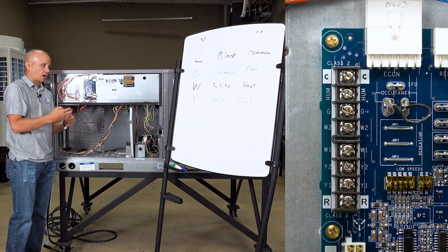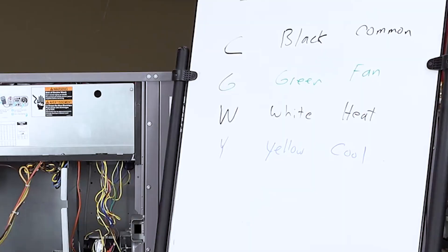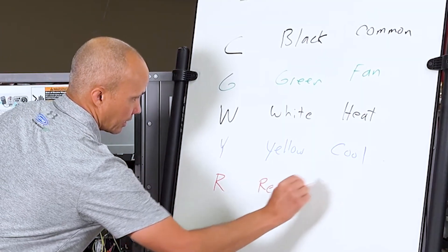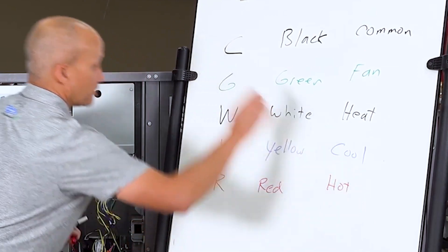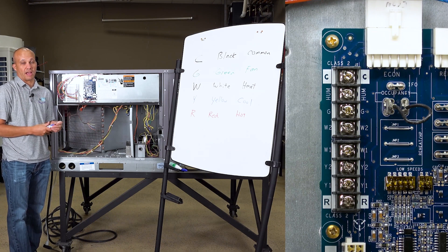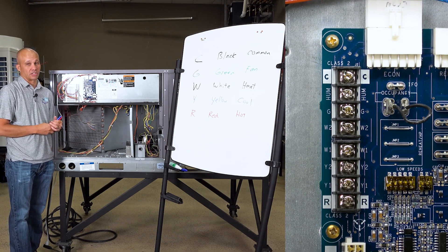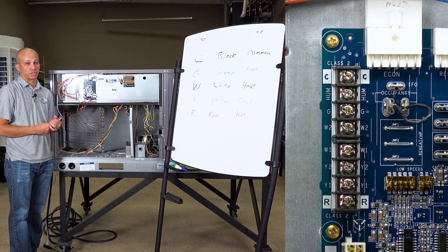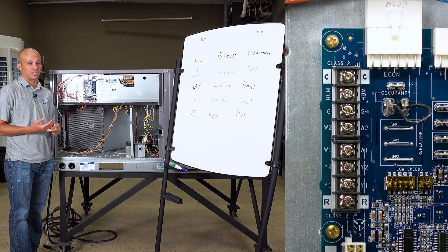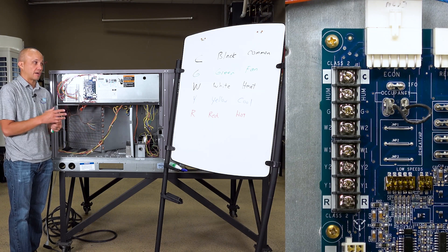And then the last one down there is R, which as you probably would guess is red, and that's the hot. So one, two, three, four, five, that's my standard thermostat wiring that I'm going to have on pretty much any single stage heating and cooling unit. If you have a heat pump, that's going to be a different beast. But if it's gas fired heat or electric heat and it's one stage, this is how it's going to wire up.